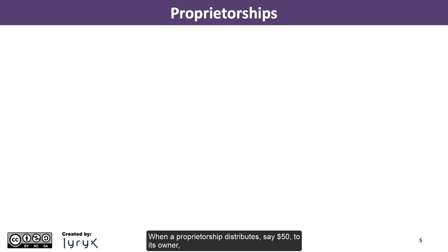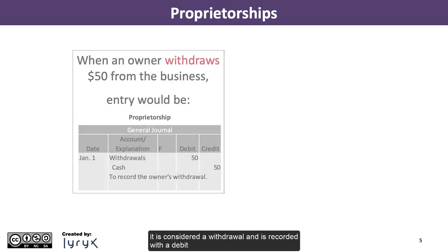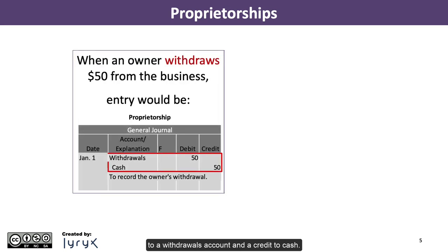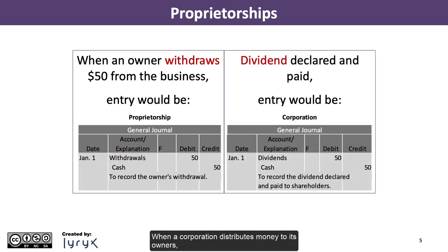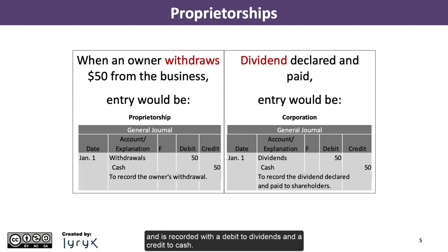When a proprietorship distributes, say $50,000, to its owner, it is considered a withdrawal and is recorded with a debit to a withdrawals account and a credit to cash. When a corporation distributes money to its owners, that distribution is called a dividend and is recorded with a debit to dividends and a credit to cash.